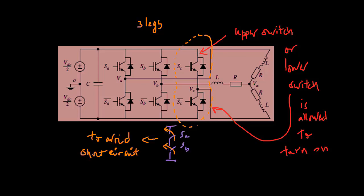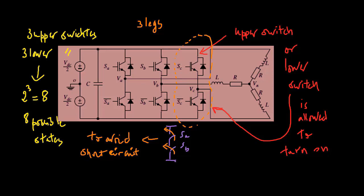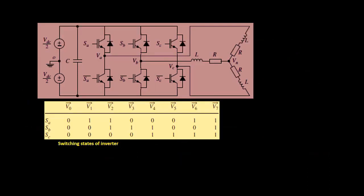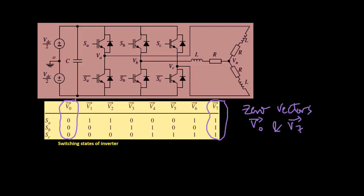As a result, there are only eight possible switching states by turning on and off all the switches in the inverter. Since the states of upper and lower switches within the same leg are complementary to each other, all eight switching states can be independently identified by the states of the three upper switches, as listed in this table. Among these, two switching state vectors V0 and V7, which represent the cases where either all the upper or all the lower switches are turned on — leading to an open circuit — are called zero vectors. In contrast, the other six states that form a closed circuit are called active vectors.